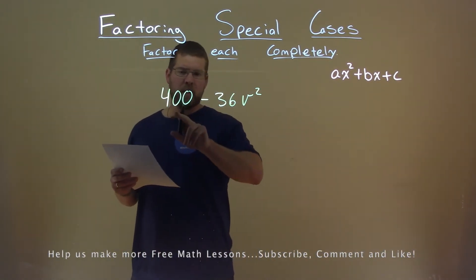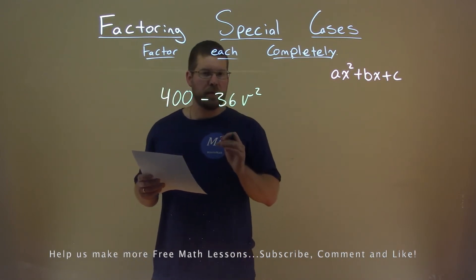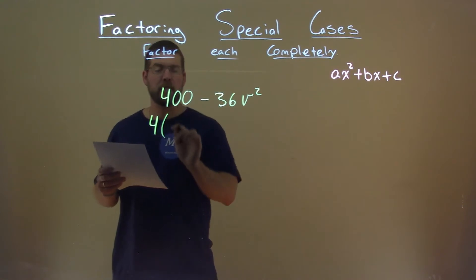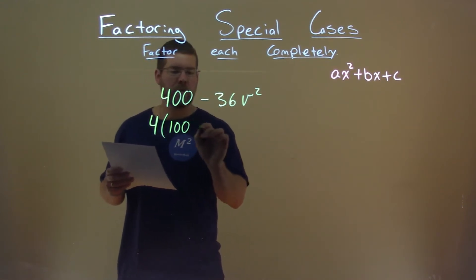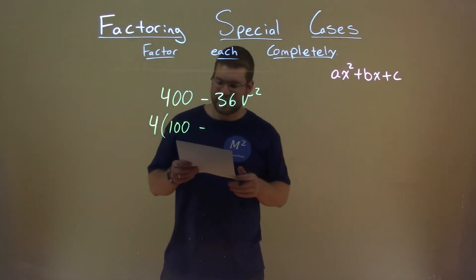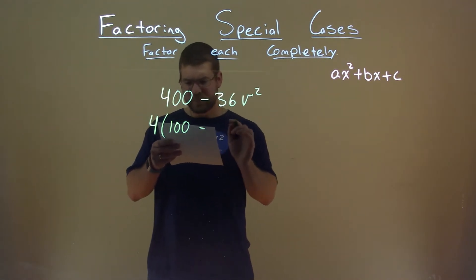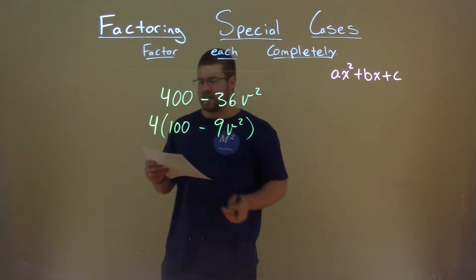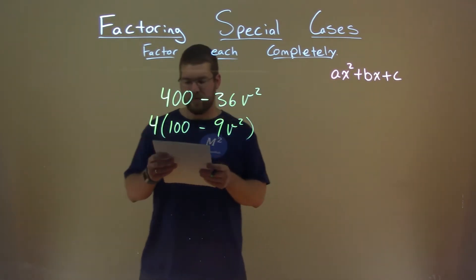Well, first thing I notice here is that I can simplify this a little bit. I can pull out a 4 from both parts. Pulling out a 4 from 400 gives me 100. Pulling out a 4 from 36 gives me 9. So we have 9 here, V squared, and now we have 4 times 100 minus 9V squared.